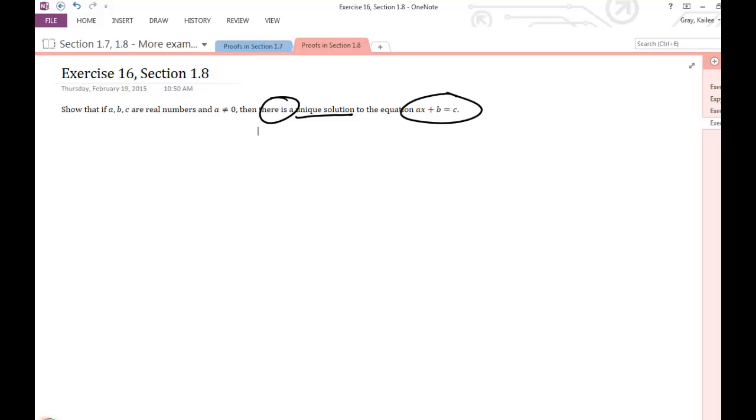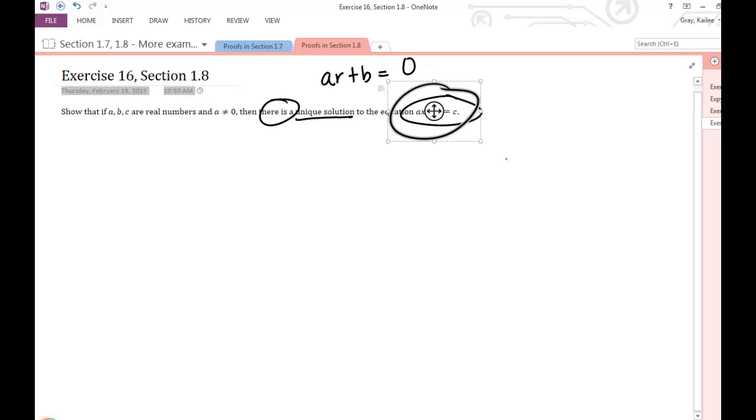Example 13 is super helpful. What example 13 goes through and does is shows that there exists a unique r such that a times r plus b is equal to 0. So this is super similar except instead of 0 we have c, so nothing crazy there, just stepping it up slightly.